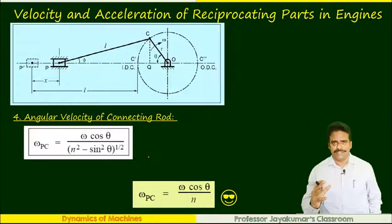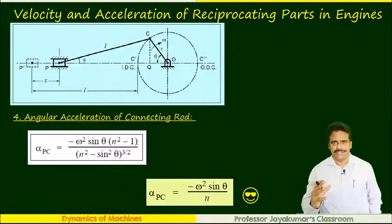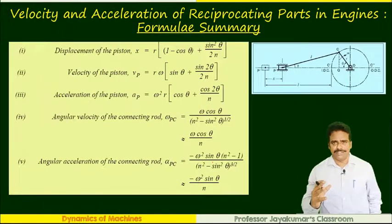Similarly, I could derive the remaining equations. Directly I'm giving you the equation for angular velocity of connecting rod, omega PC. Normally, when theta is very small, sine square theta is negligible compared to n square value. Ignoring that, this will be a simplified equation. Finally, we got the expression for angular acceleration of connecting rod. I could simplify assuming sine square theta value is still very lesser compared to n square. These are all the formulas which we call kinematic characteristics of an IC engine. These formulas will be very handy while solving dynamic force analysis of IC engines.